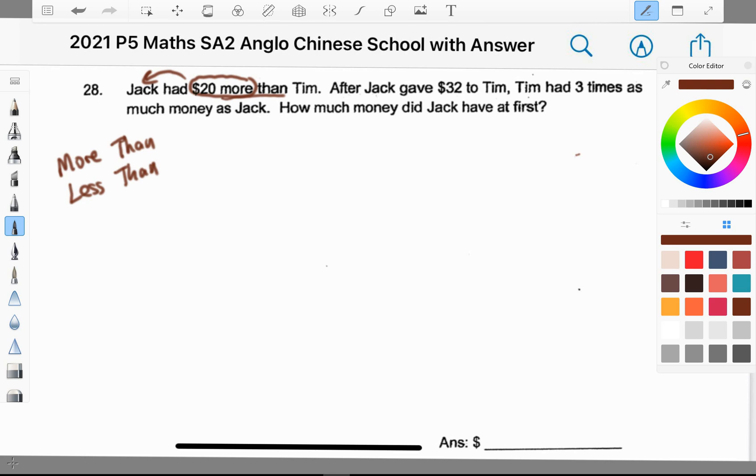In the question, Jack gave $32 to Tim. This is very important information, that's why I underline it. Then they say that Tim had three times as much money as Jack. So three times, three units will be pointed to Tim. Jack appeared after the second S in this sentence, so Jack will be one unit.